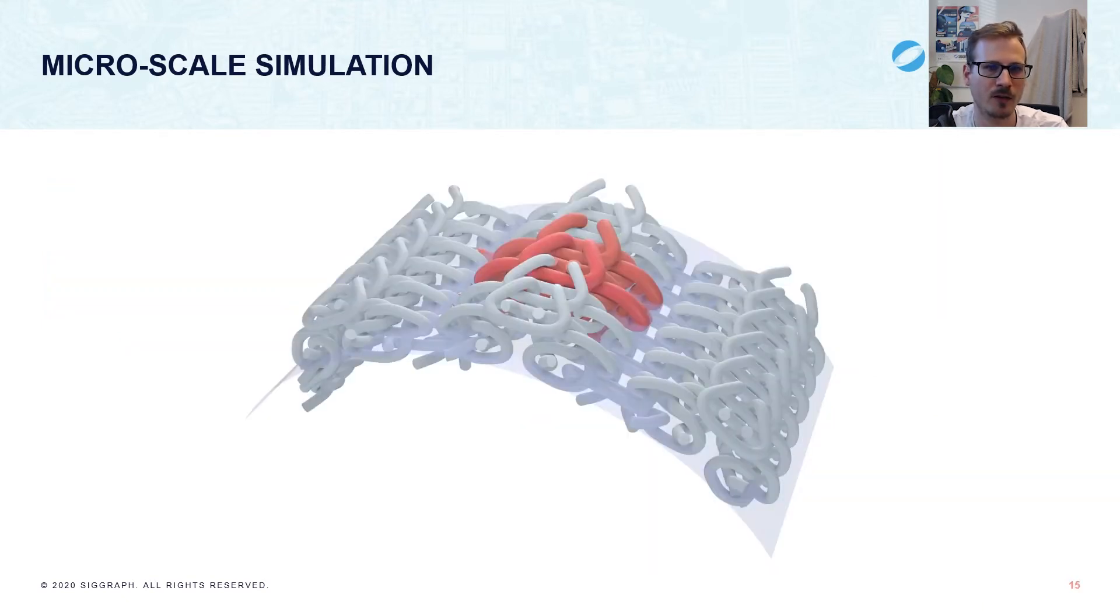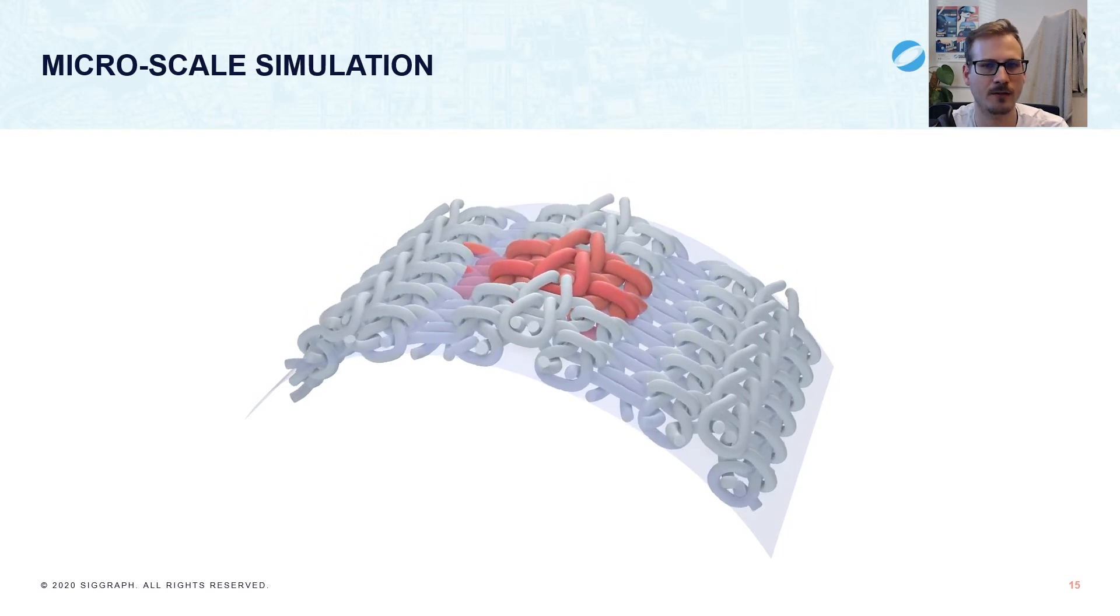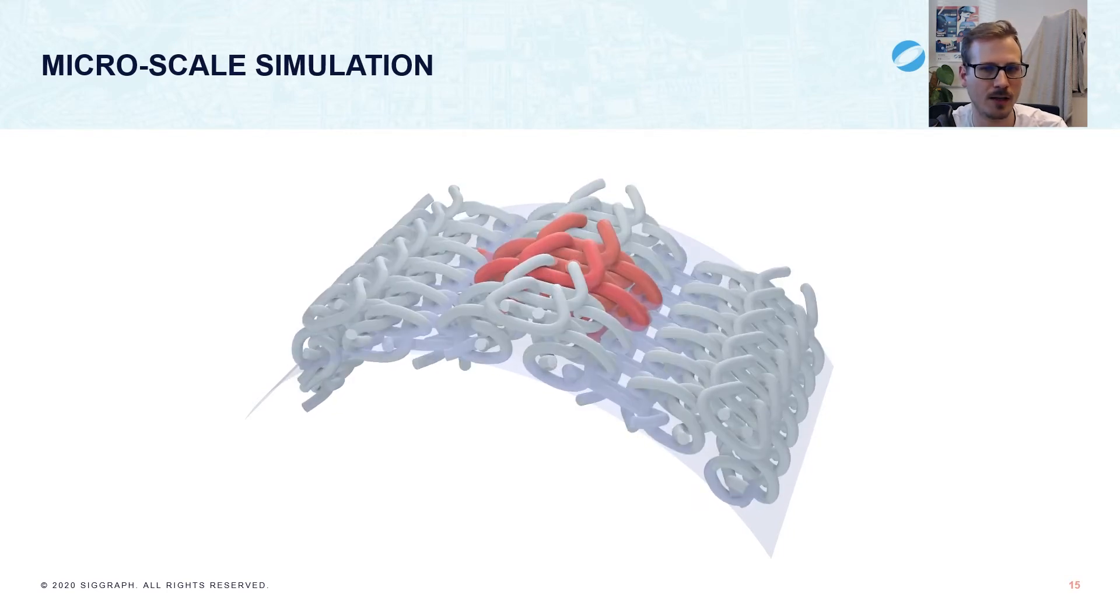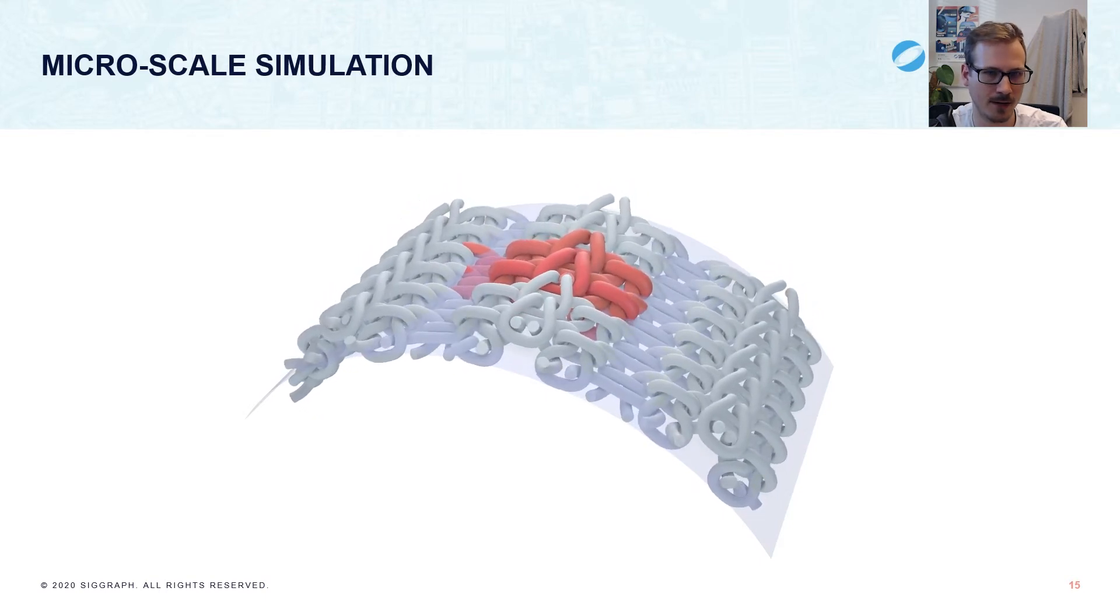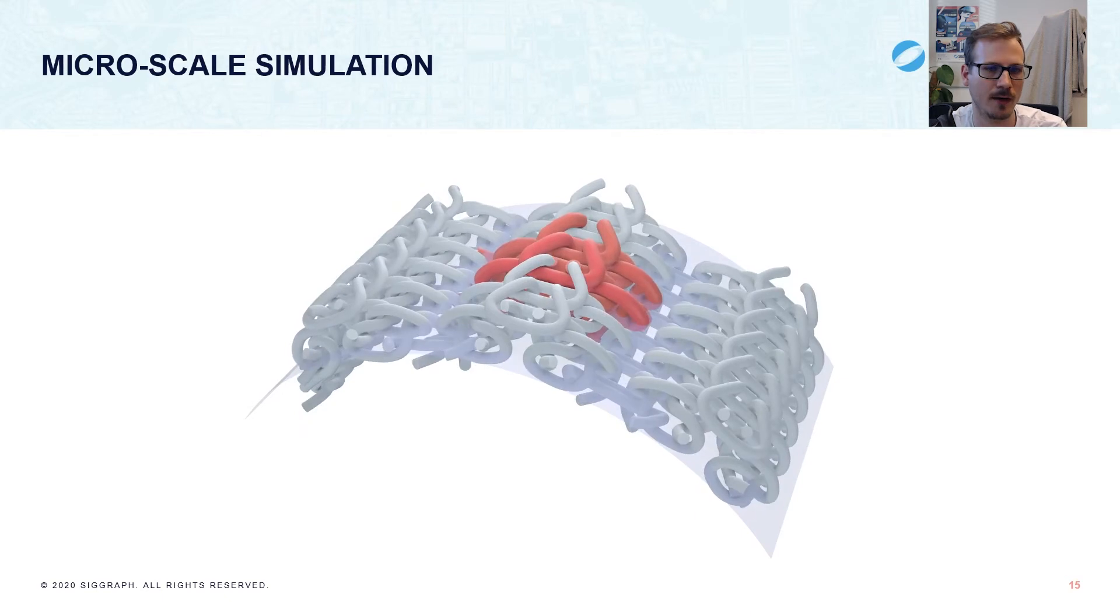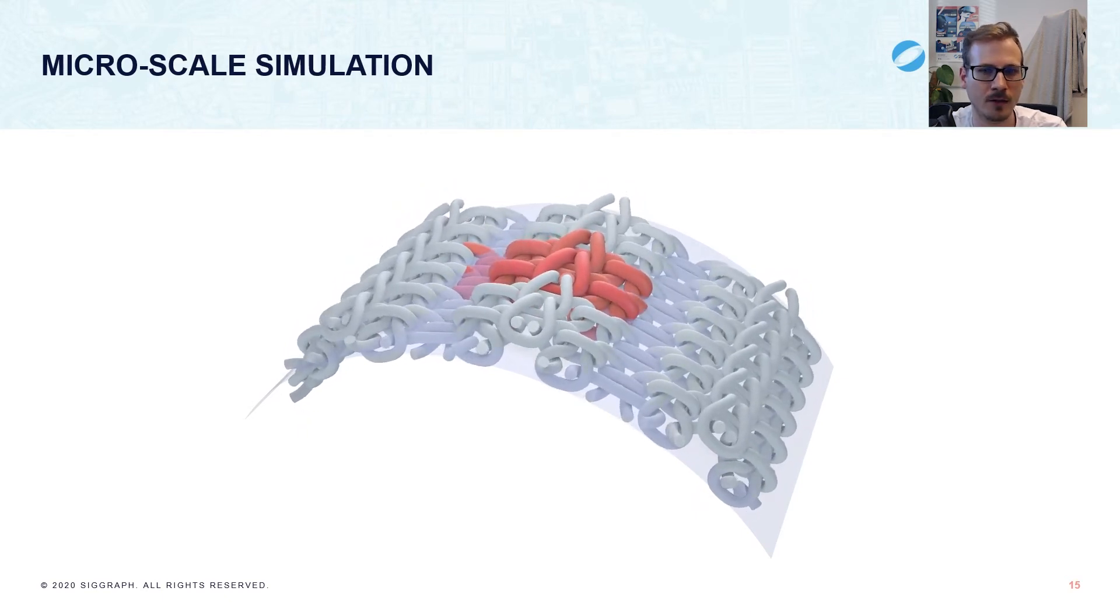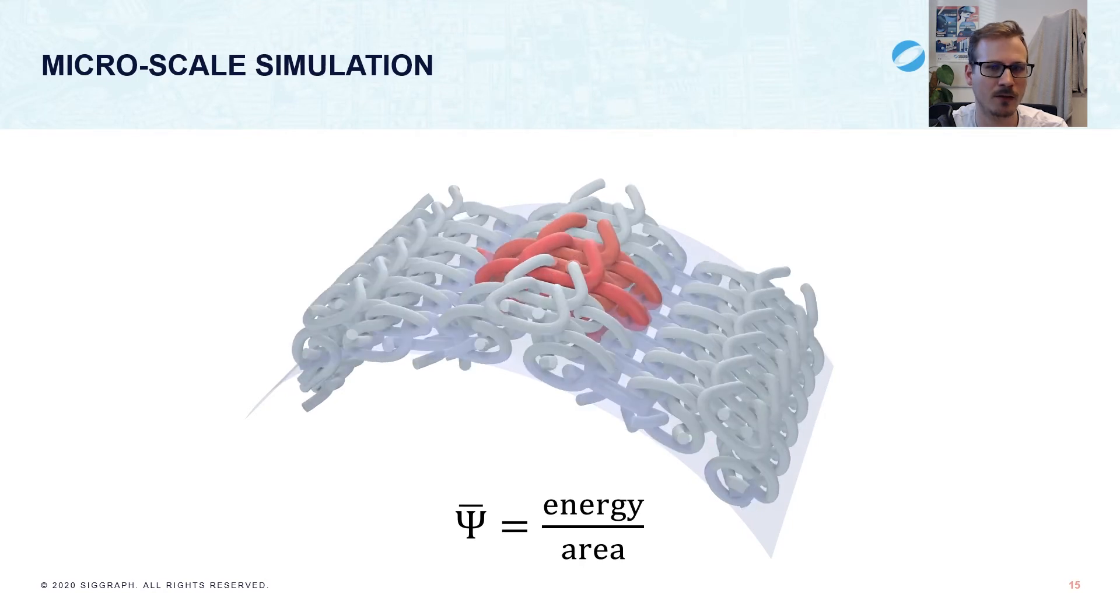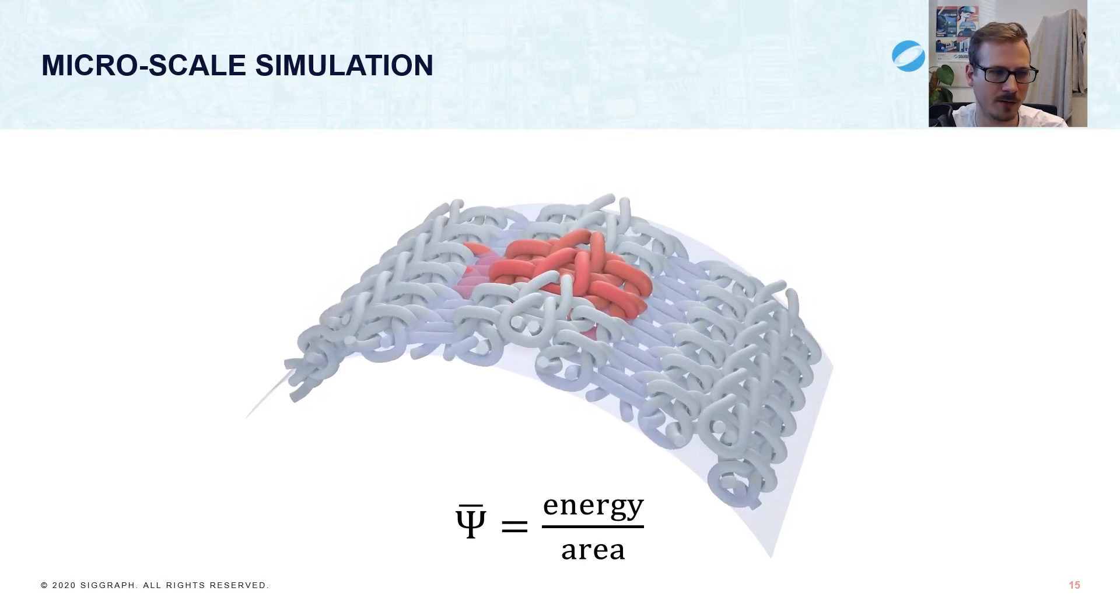All in all, the convergence looks a little something like this. Here, we see a rib knit with the periodic tile in red and the copies along the surface in gray. The pattern here is being stretched and bent, and we can see how the yarns tighten while still staying true to the curved surface. To finalize homogenization, at the converged state, we compute the homogenized energy density psi bar simply as the total energy divided by the surface area of the periodic tile.